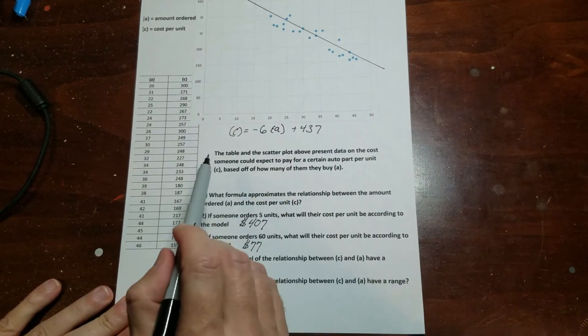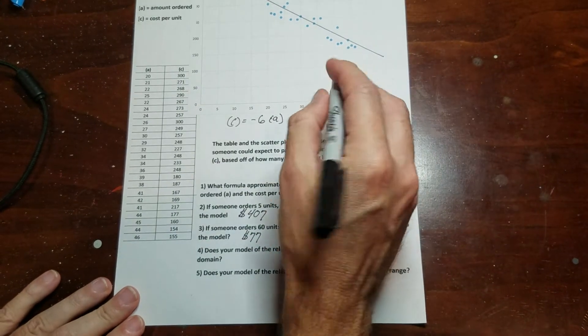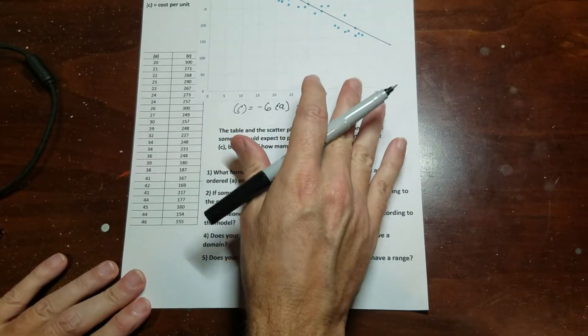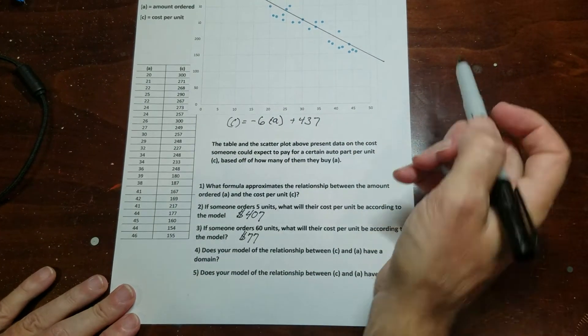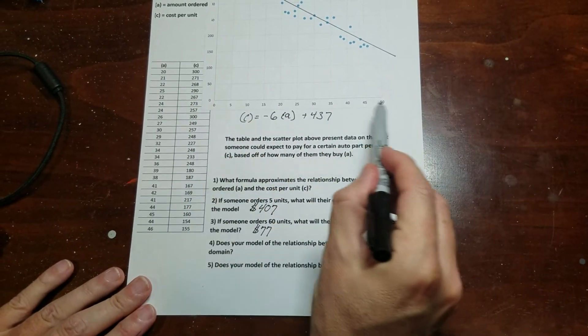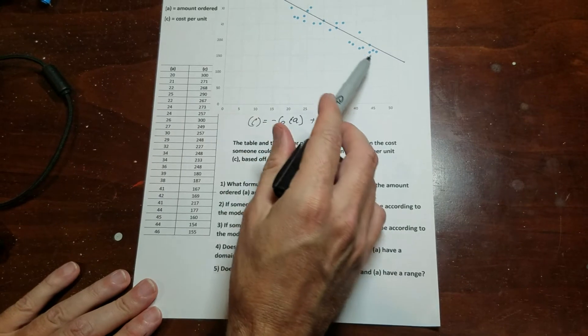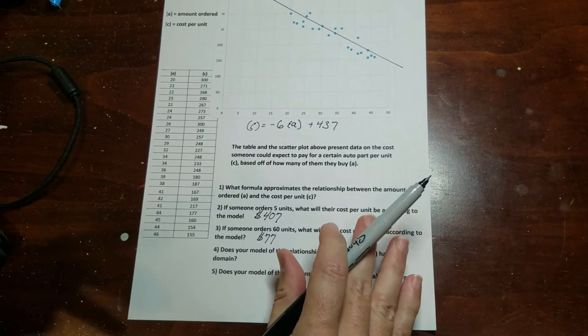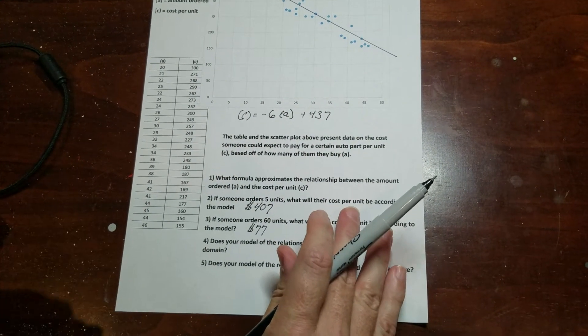We have our rule. So remember, what this does is it's finding the relationship between the amount ordered and the cost per unit. What this is showing is that the more you order, the amount per unit is actually going down, which makes sense. The more you buy, the more you save.